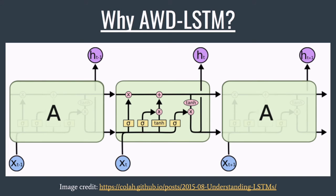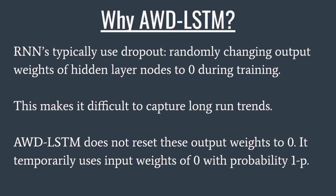You might be wondering why we chose to use an LSTM model. Regular RNNs have difficulty learning long-term dependencies in text and typically cannot identify patterns that exist across multiple paragraphs. Since we are trying to compare several paragraphs to several other paragraphs simultaneously, this presents a problem. LSTMs typically use a method called dropout to prevent overfitting, wherein the output weights of hidden layer nodes in the model are randomly reset to 0. Unfortunately, this can inadvertently obscure long-run trends in the document, which is precisely what we are trying to detect.